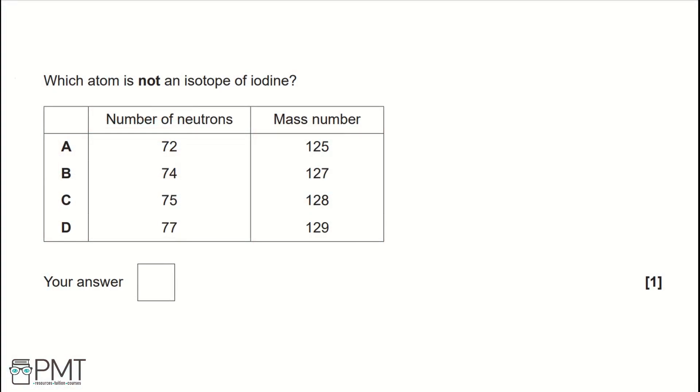Which atom is not an isotope of iodine? For this question, we first need to work out what the proton number of iodine is. The proton number of iodine is 53. The mass number is the number of neutrons and the number of protons.